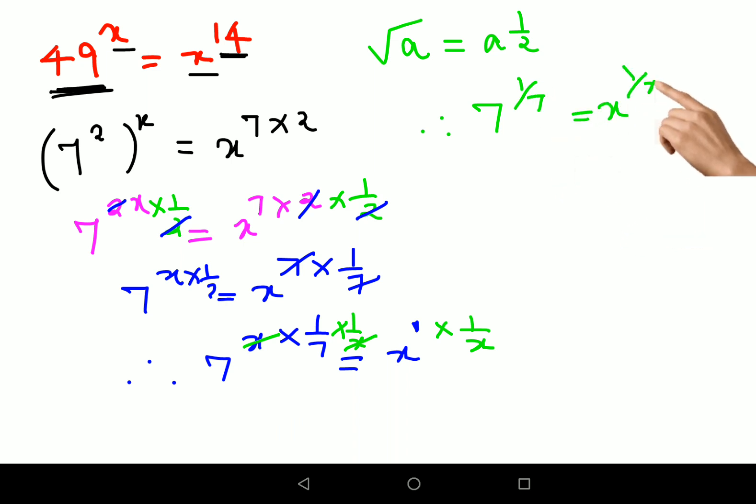Now this is in the format of the bases and indices being equal on both the sides of equal to. So when you have that, you can directly say that a equals to b. Therefore I can say x value is nothing but just 7.